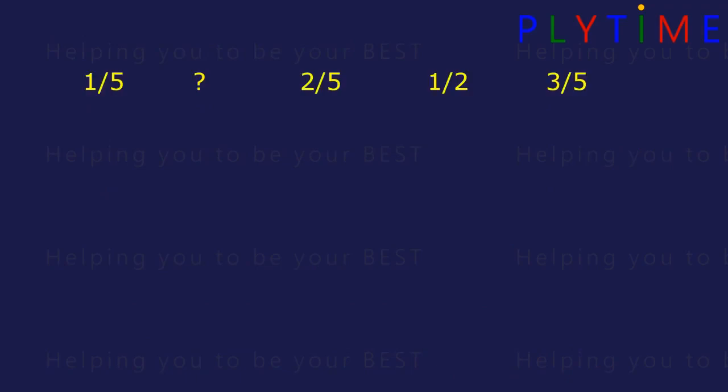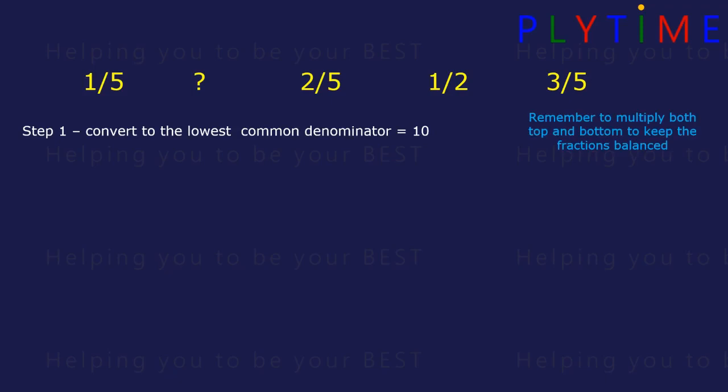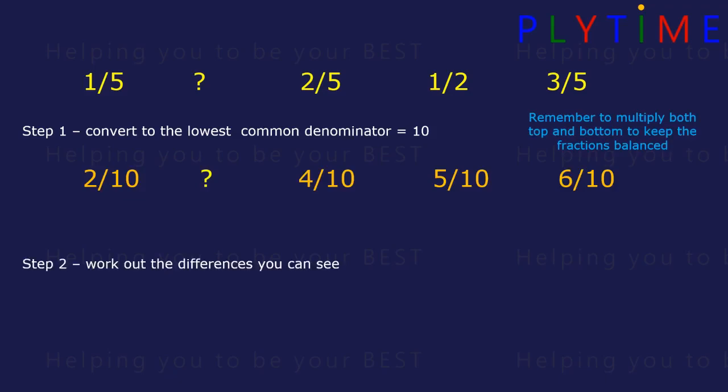What about these numbers? Find the lowest common denominator — here it would be 10. Then convert the numbers, doing the same to the top and the bottom to keep the fraction balanced. 1 fifth becomes 2 tenths, 2 fifths is 4 tenths, a half is 5 tenths, and 3 fifths are 6 tenths. Now look at the difference.